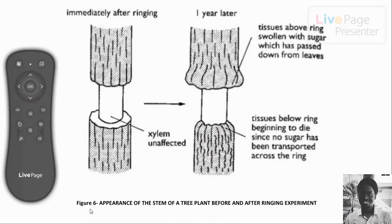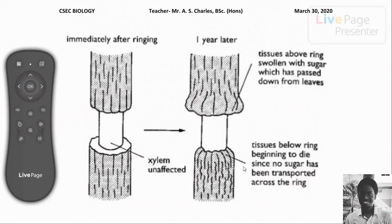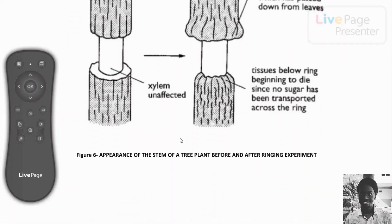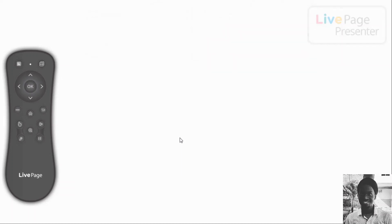Figure six shows the appearance of the stem of a tree before and after the ringing experiment — also called the girdling or ring-barking experiment. This will eventually kill the tree. That is why it is not good to remove the bark from trees — the bark protects the phloem sieve tubes, which are needed to transport materials produced in the leaves during photosynthesis to the developing parts of the plant.